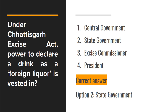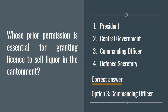Next: Under the Chhattisgarh Excise Act, power to declare a drink as foreign liquor is vested in the state government, under Section 4. And whose prior permission is essential for granting a license to sell liquor in a cantonment area? The answer is the commanding officer's prior permission — this is provided under Section 20 of the act.